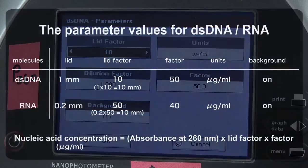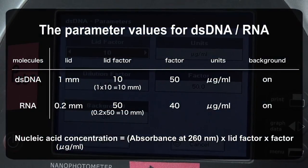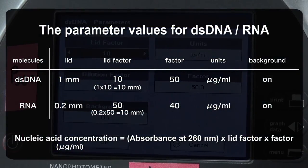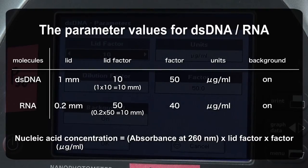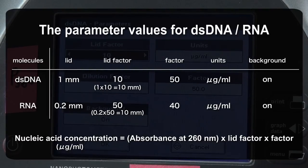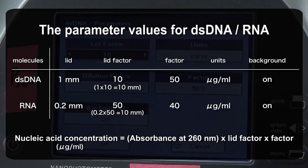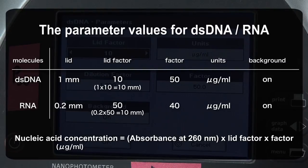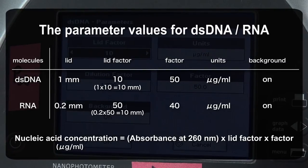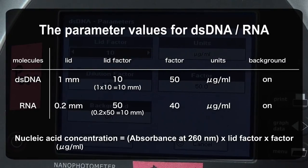The table lists the parameter values for double-stranded DNA and RNA and the nucleic acid concentration is calculated from the measured absorbance. Nucleic acid concentration microgram per milliliter is the product of absorbance at 260 nanometer and lid factor.